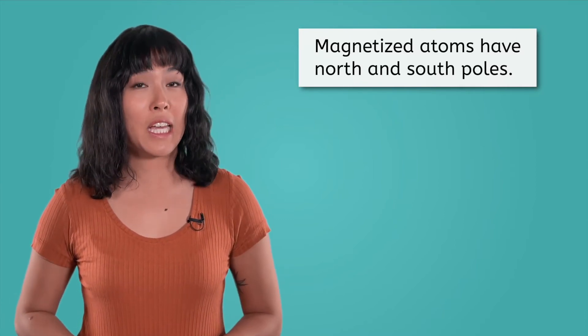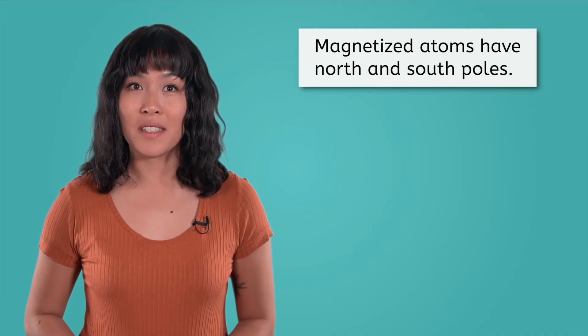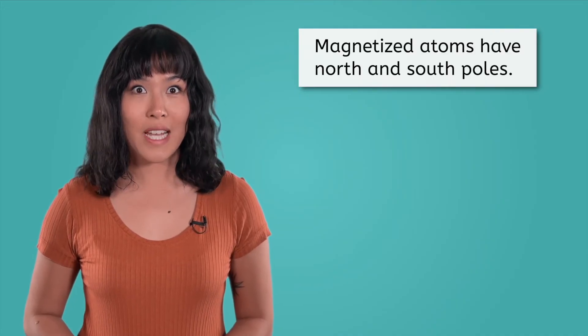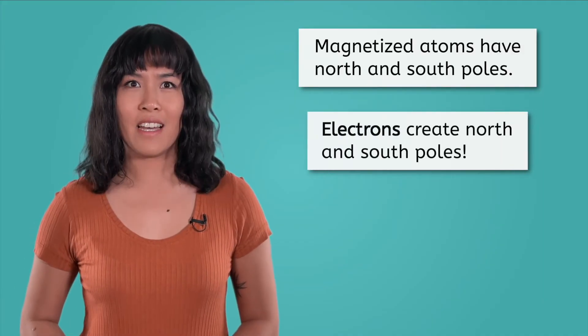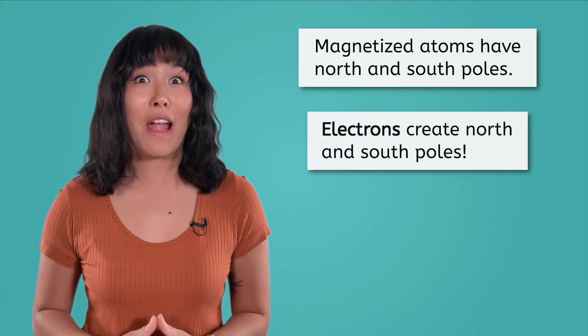What part of the atom do you think can create magnetic poles? Maybe the same one that creates electricity? Yup, the electrons strike again. Those little particles sure are everywhere.